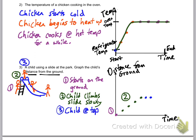All right, number three, the child's at the top. They're going to stay at the top for just a second. I'm going to make a few points there. And this is a horizontal because the child's distance, their height distance from the ground, is not going up or down at that point. It's just staying level.